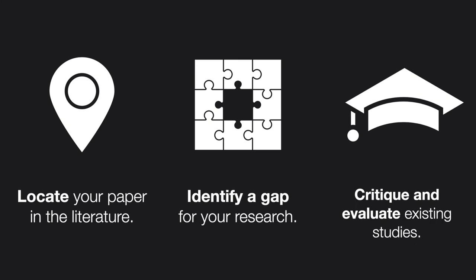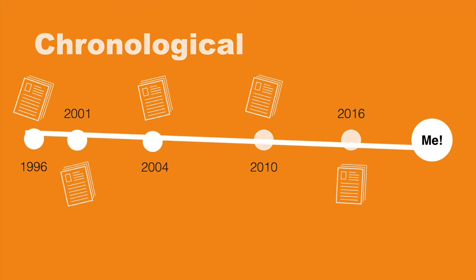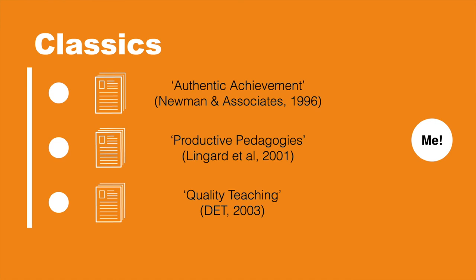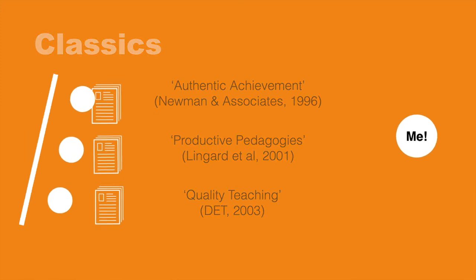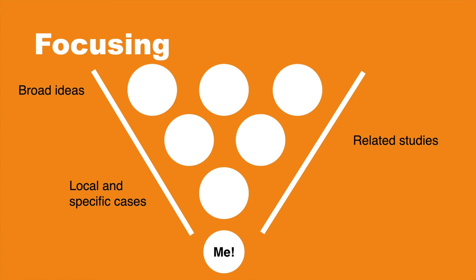Remember the three functions of a literature review? These can give you a hint about how to structure it. You might take a chronological approach, which positions your research at the end of a historically evolving field, tracking a research narrative forward through time. Alternatively, you might look at the classics in your field — identifying the big seminal texts and exploring how they relate to other literature as well as your own study. A more common approach is to write a thematic literature review, where you identify key themes and ideas that emerge from your research into the field, using subheadings to mark out the different turns in your argument. Or you might take a focusing approach, where you start with the big, broad theoretical ideas in a field, then gradually narrow the focus to studies that deal with your research approach or context, and finally zero in on your own contribution.